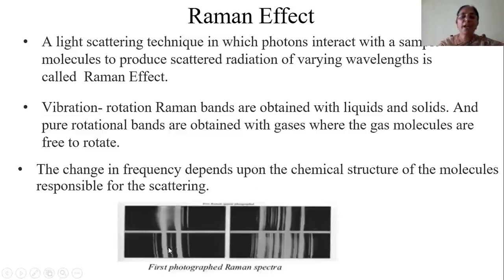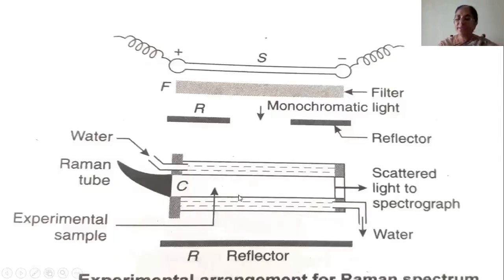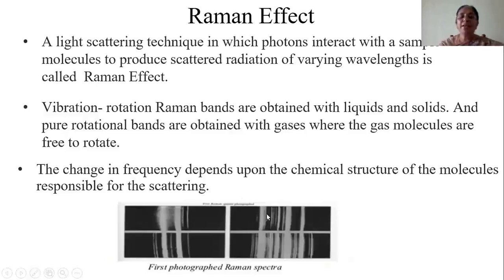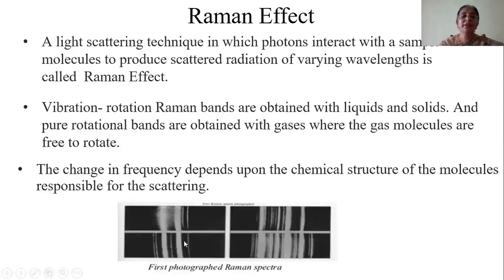This is the spectrum originally obtained by Raman. The line present in the scattered light whose frequency did not change is the unmodified line. On one side, a cluster of lines shows frequencies greater than the original line — these lines are due to photons that have absorbed energy from the molecule. On the other side, lines are seen whose frequency is reduced — these are due to photons which have donated energy to the molecules.